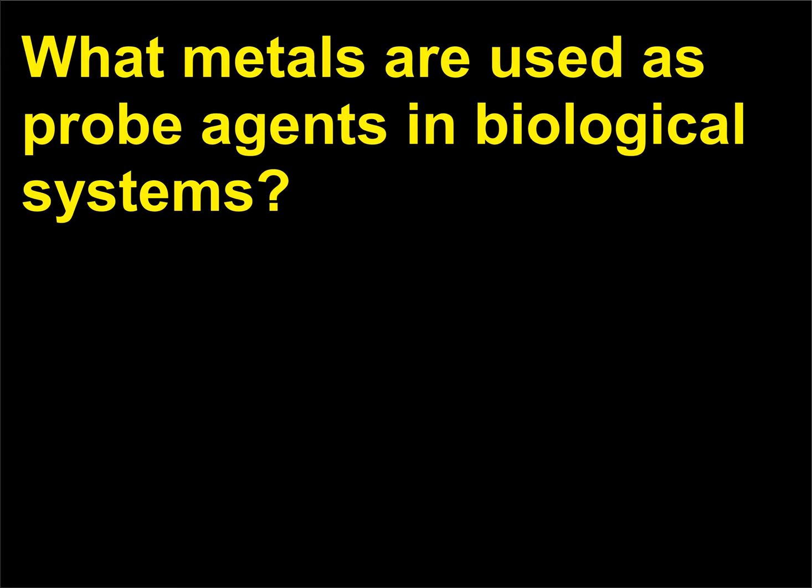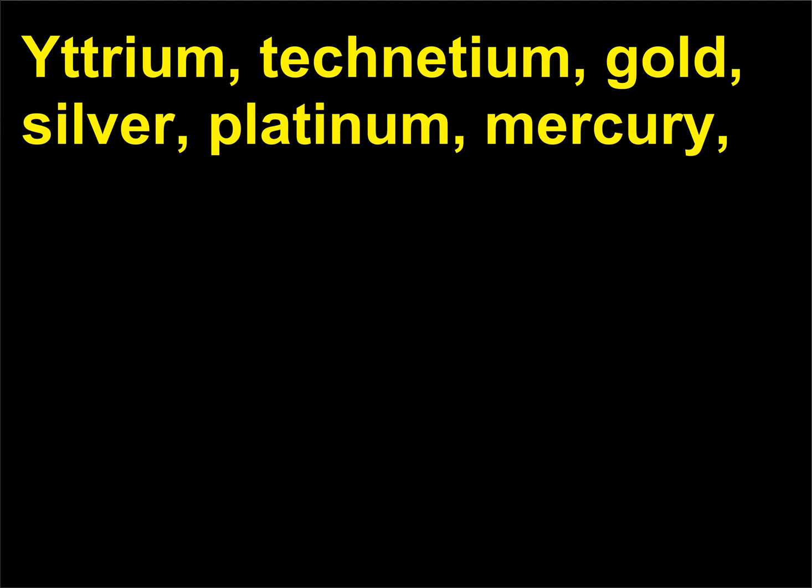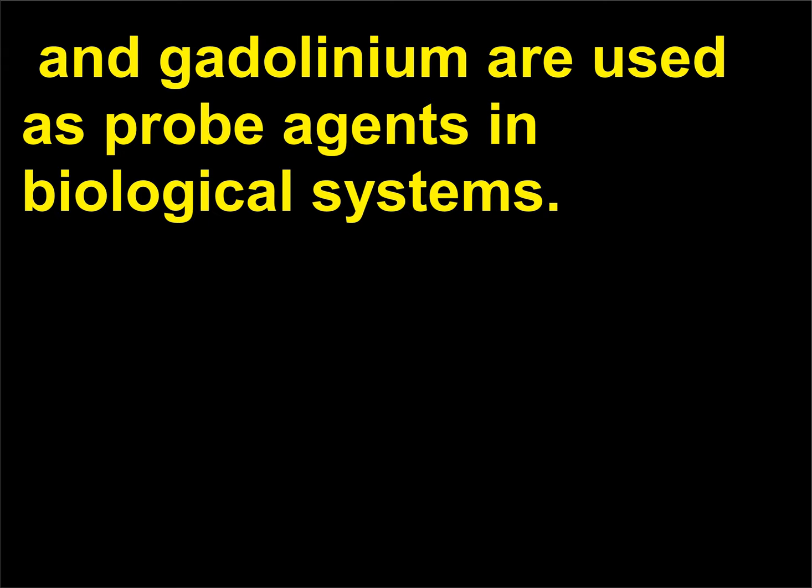What metals are used as probe agents in biological systems? Yttrium, technetium, gold, silver, platinum, mercury, and gadolinium are used as probe agents in biological systems.